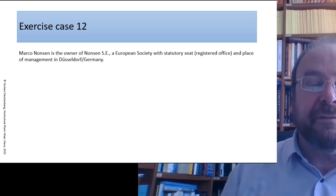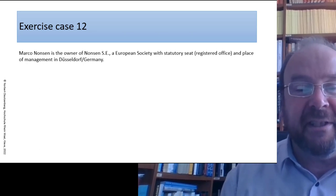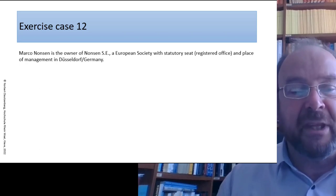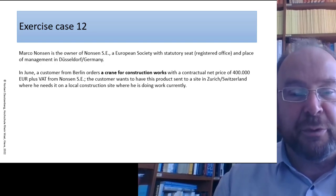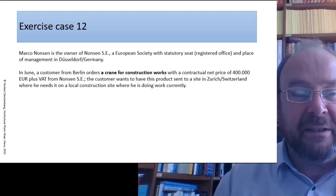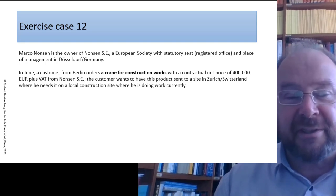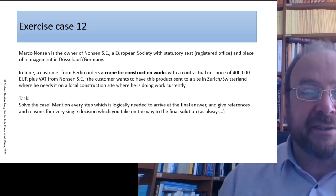Marco Nonsen is the owner of Nonsen SA, a European society with a statutory seat, or registered office and place of management in Düsseldorf, Germany. In June, a customer from Berlin orders a crane for construction works with a contractual net price of $400,000 plus VAT, if any arises, from Nonsen SA. The customer wants to have this product sent to a site directly in Zurich, Switzerland, where he needs it for a local construction site.